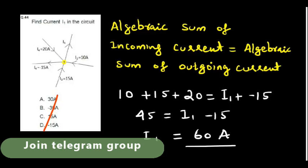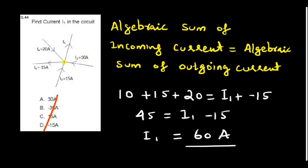Find the current I1 in the circuit. As per Kirchhoff's first law, the algebraic sum of currents entering a node equals the algebraic sum of currents leaving the node. If we calculate, it should come to 60 amps, but 60 amps is not in the given options, so this question is wrong.